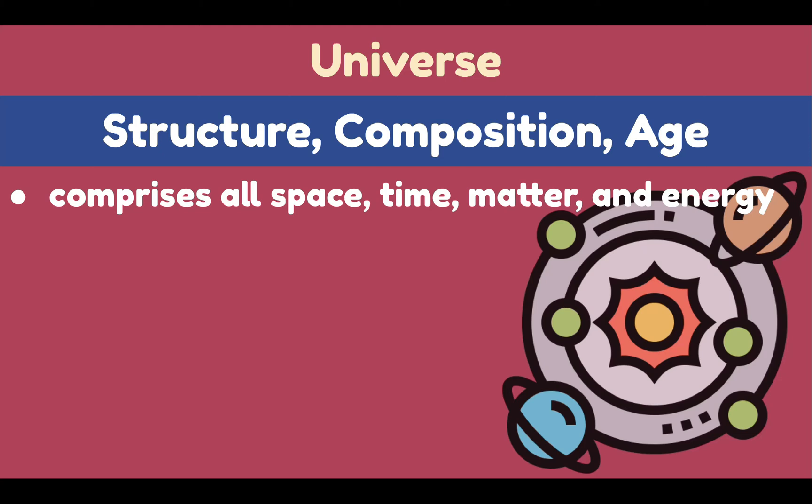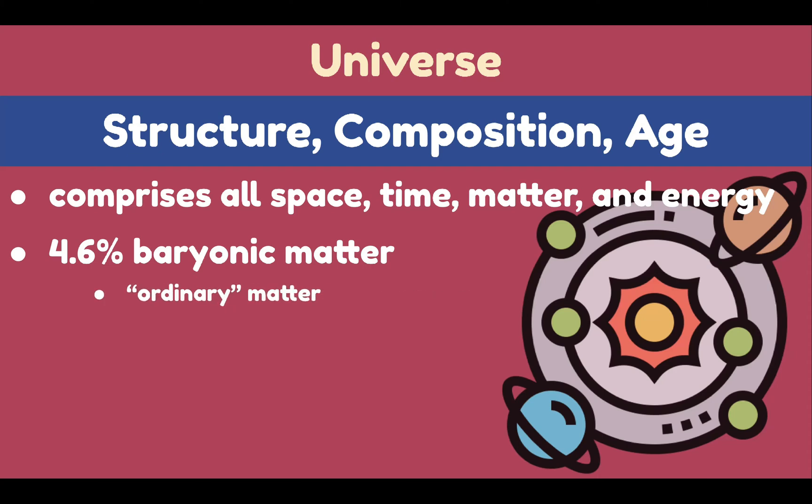The universe is made of 4.6% baryonic matter. Baryonic matter is the ordinary matter consisting of protons, electrons, and neutrons, as well as atoms, planets, stars, galaxies, nebulae, and other bodies.